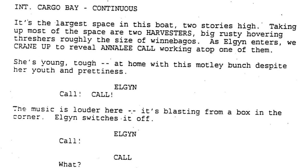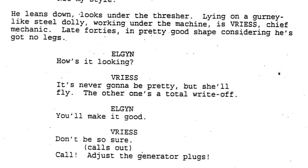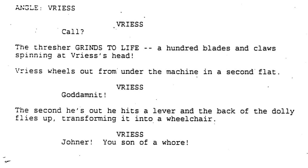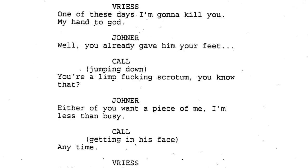Elgin continues through the cargo bay where we set up Chekhov's harvesters in the undated and 1995 drafts — these will come into play during the climax of the film. Also in these early drafts, Vreese has no legs at all, as opposed to having paraplegia in the later scripts and the film. As such, Jonna isn't able to drop the knife into his legs in the earlier scripts, but instead turns on the harvester's blades mere inches from Vreese's face. They trade insults such as 'limp scrotum' and 'inbred cocksucker,' and it's here we get the first indication that the undated script predates the 1995 script.